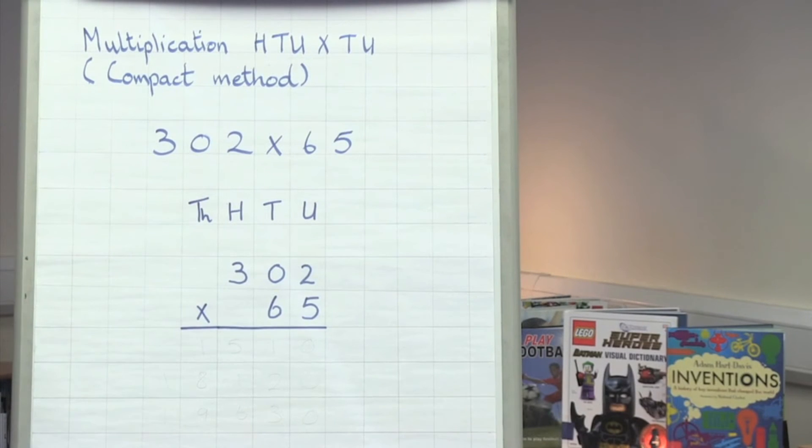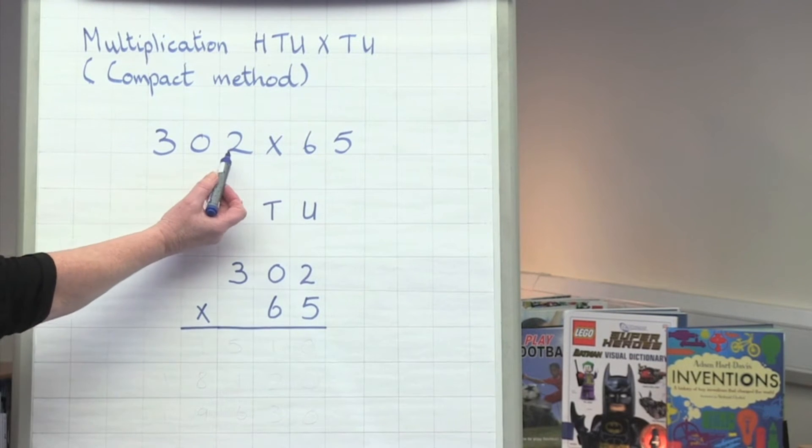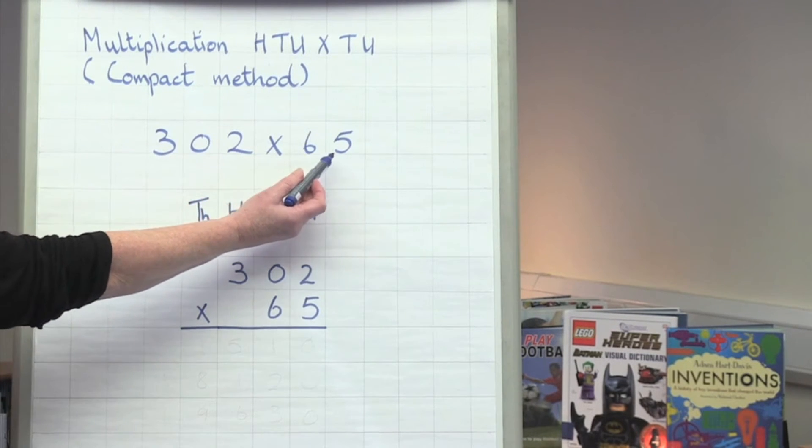Hello, this is Mrs. Brown from St. Teresa's Catholic Primary School. Today I am demonstrating multiplication three digits by two digits using the compact method. 302 multiplied by 65.